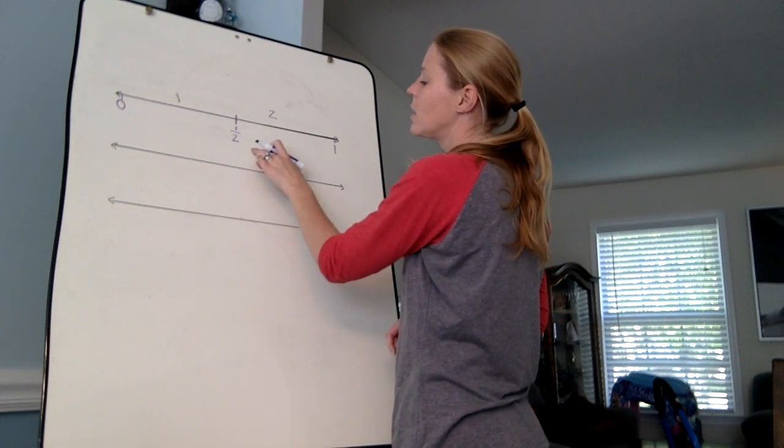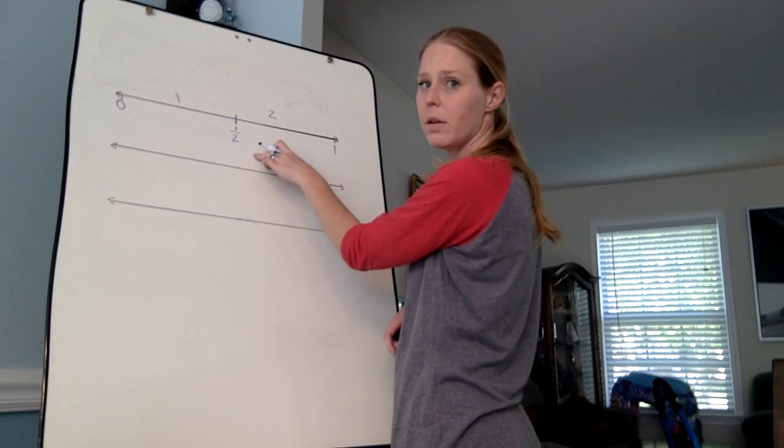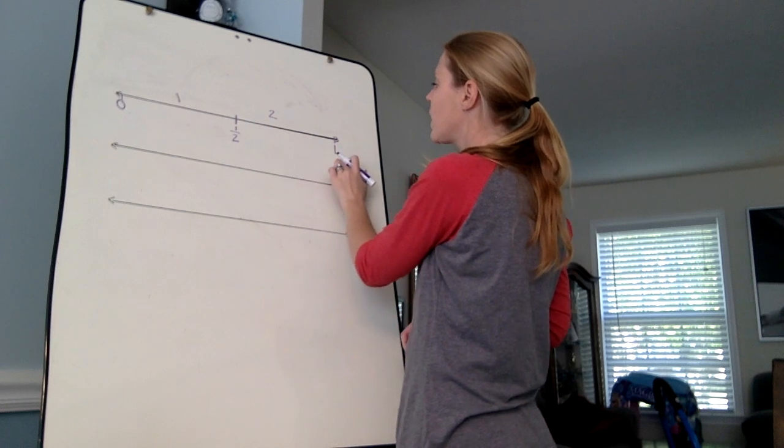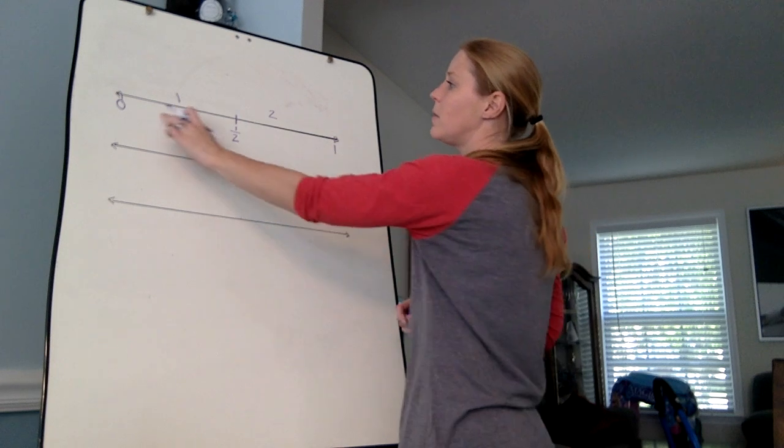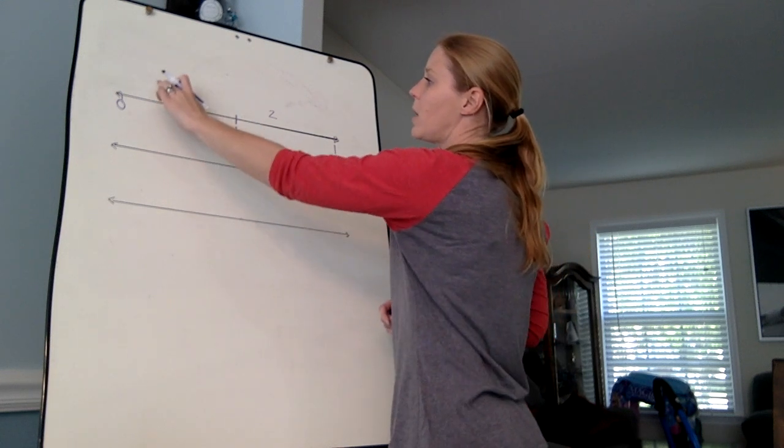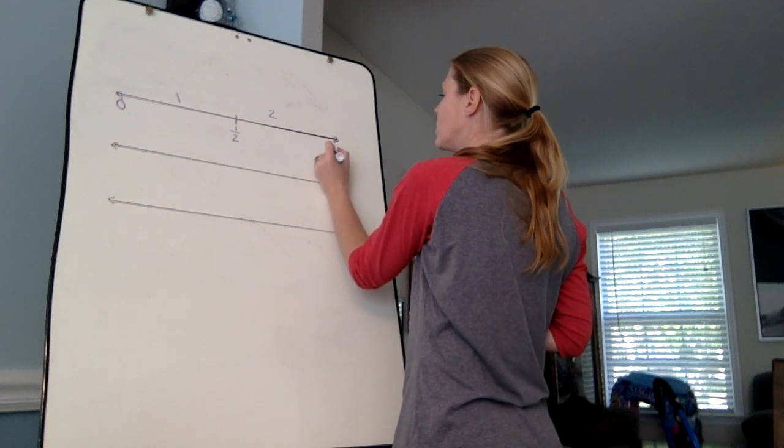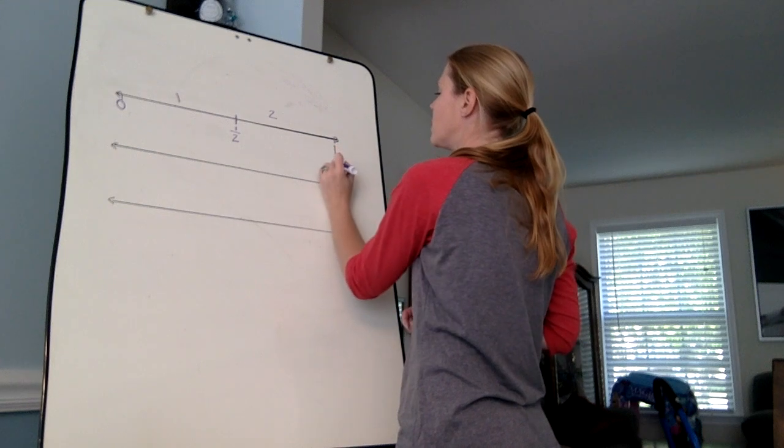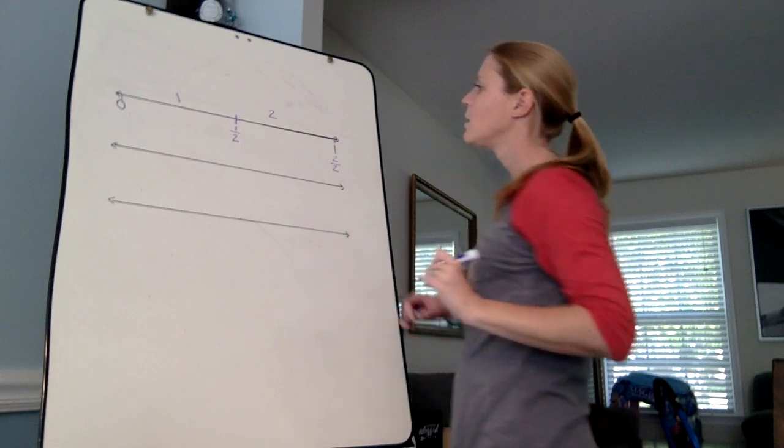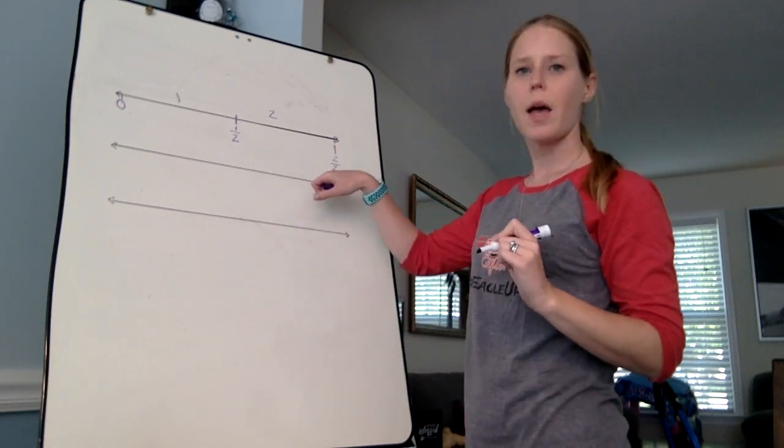My two is my denominator because I have two pieces to get to the one. So this fraction is going to be one half. If I keep going, I can also label this one whole as a fraction. Instead of just one piece I'm looking at, I'm looking at one, two pieces out of my two possible pieces. So I have two halves.